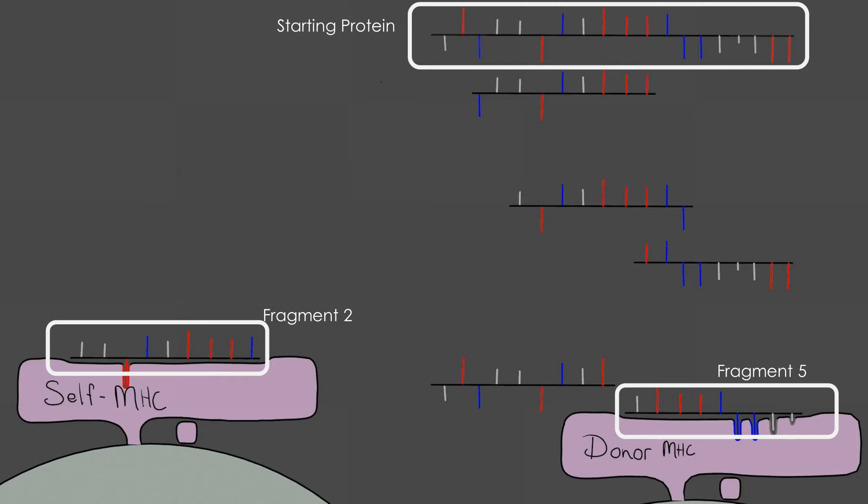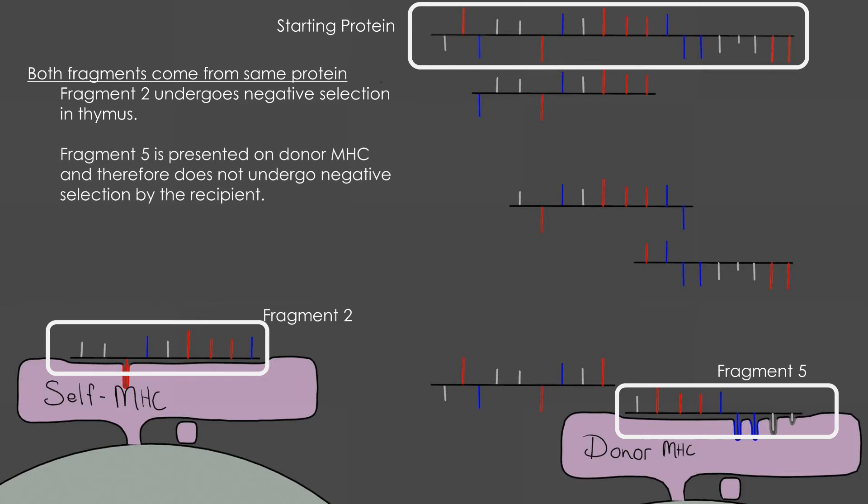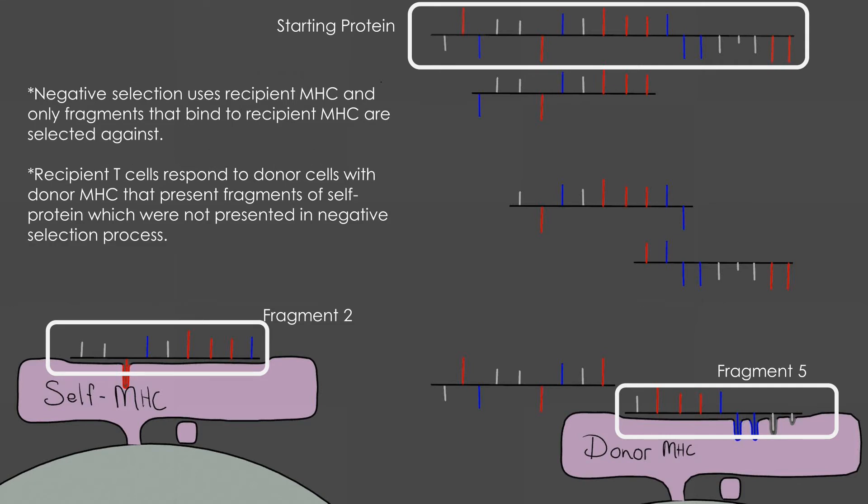Both fragments come from the same protein. Fragment 2 undergoes negative selection in the thymus. Fragment 5 is presented on donor MHC and therefore does not undergo negative selection by the recipient. Negative selection uses the recipient MHC and only fragments that bind to the recipient MHC are selected against. Recipient T cells respond to donor cells with donor MHC that present fragments of self-protein which were not presented in negative selection.